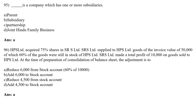MCQ 96: HPCL Limited acquired 75 percent share in SRS Limited. SRS Limited supplied goods of invoice value Rs.50,000 to HPCL Limited, of which 60 percent of goods are still in stock. SRS Limited made a profit of Rs.10,000 on goods sold. At the time of consolidation: 60% of Rs.10,000 = Rs.6,000. The adjustment is to reduce Rs.6,000 from the stock account.